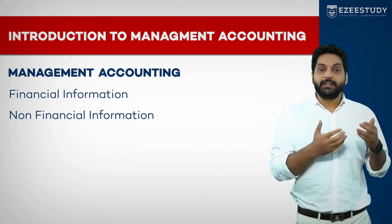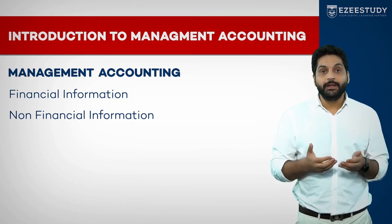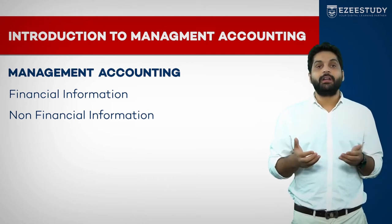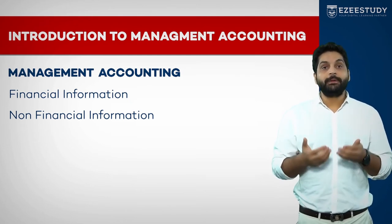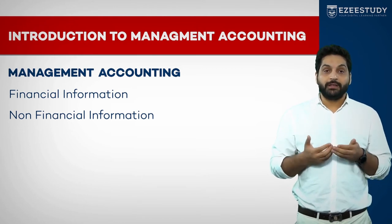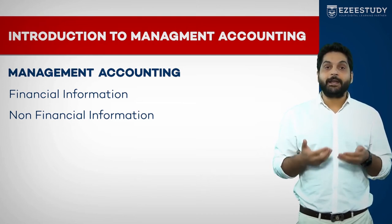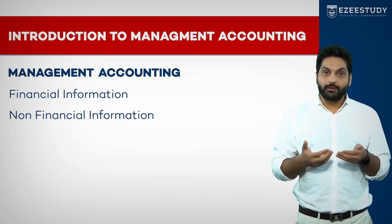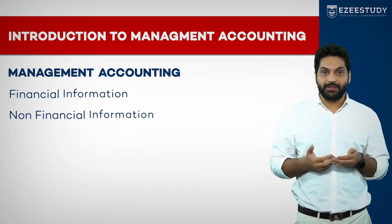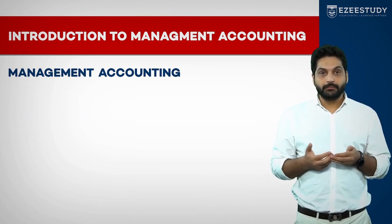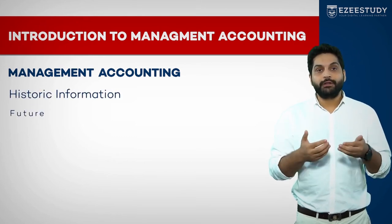You need to know the company's position — its assets, profitability — and also about customer satisfaction, whether supplies are available, and the external environment, because the company operates within an environment. So management accounting covers both external and internal, financial and non-financial information, as well as both historic and future information.